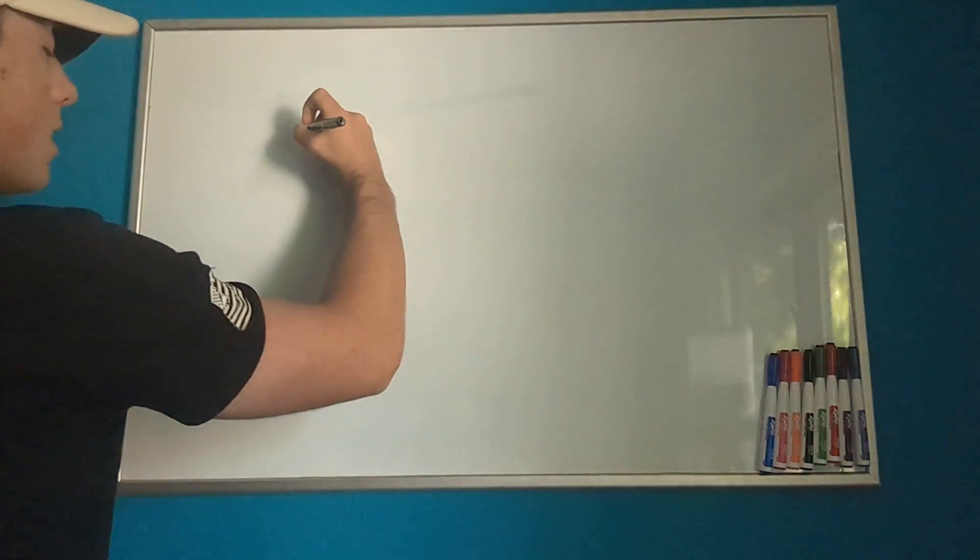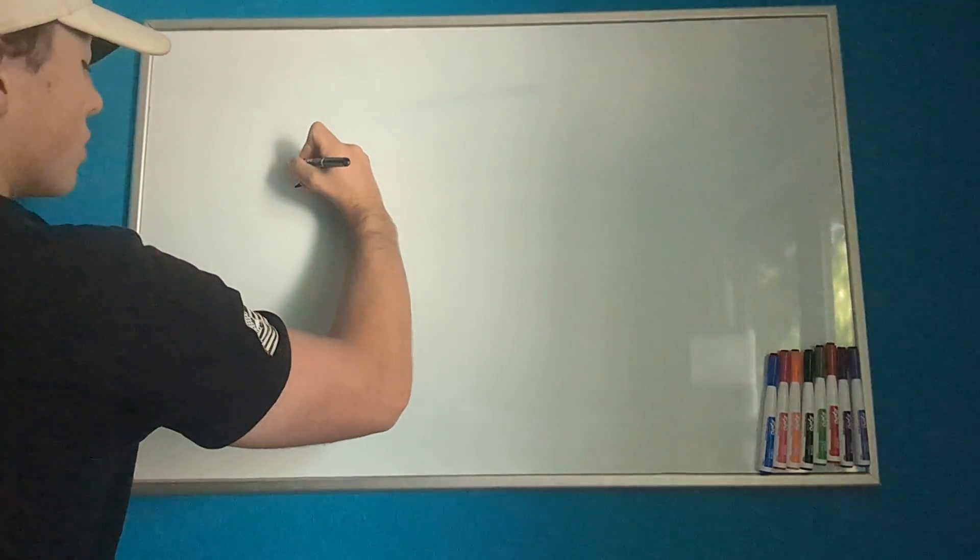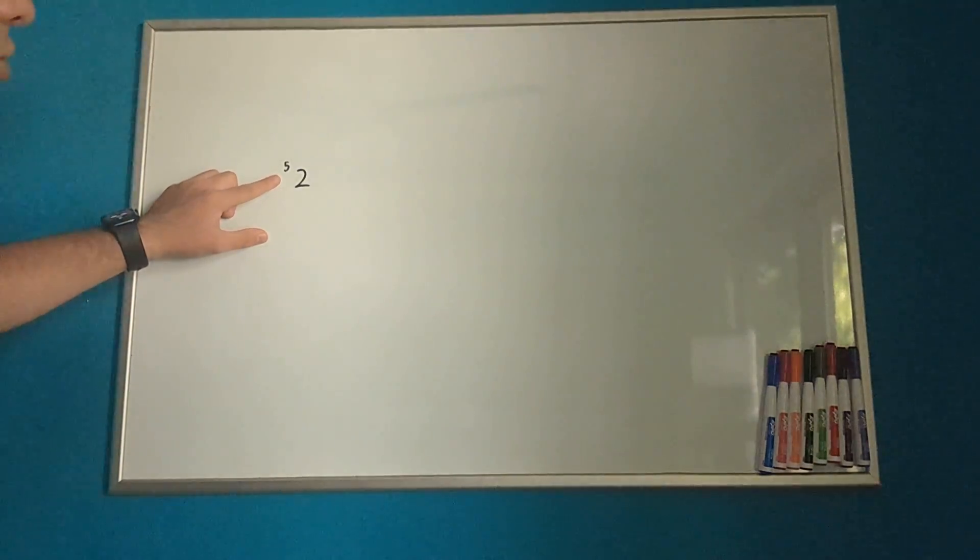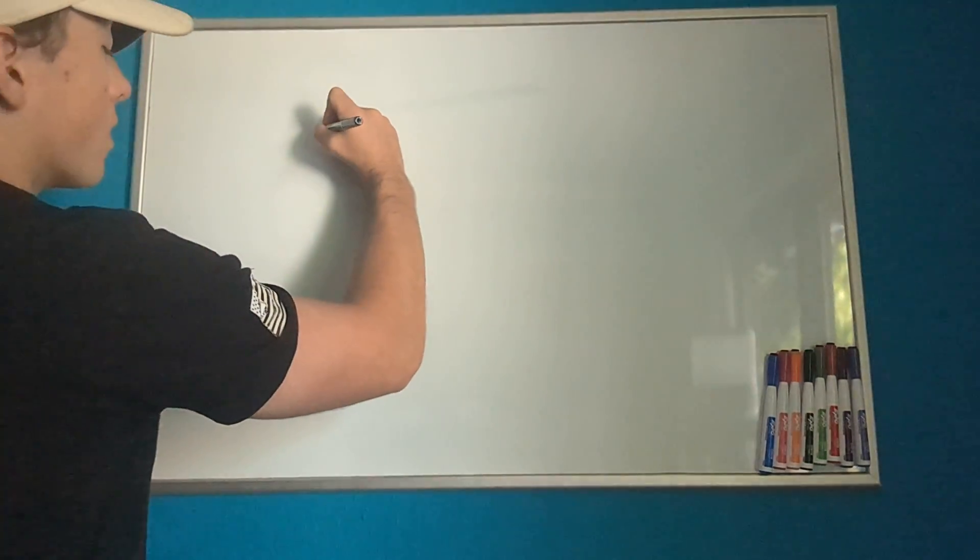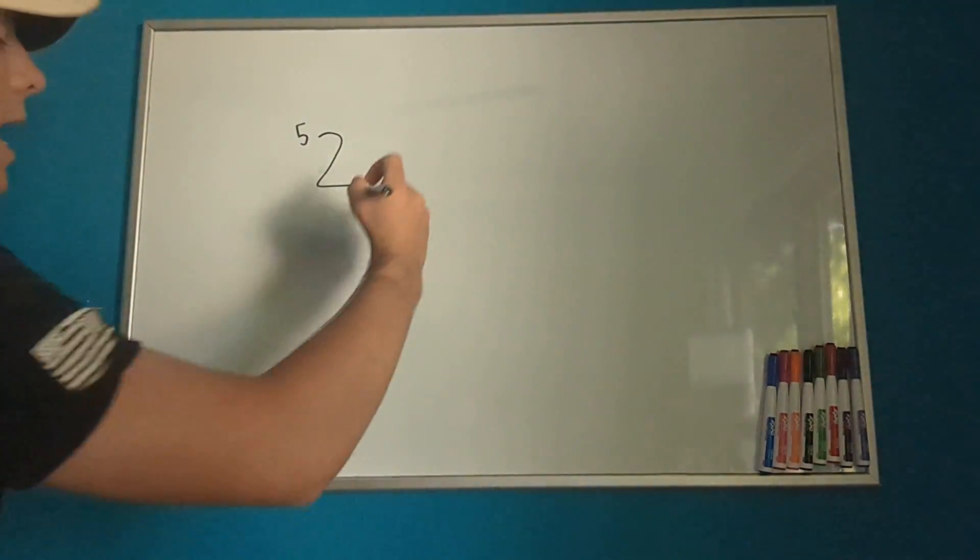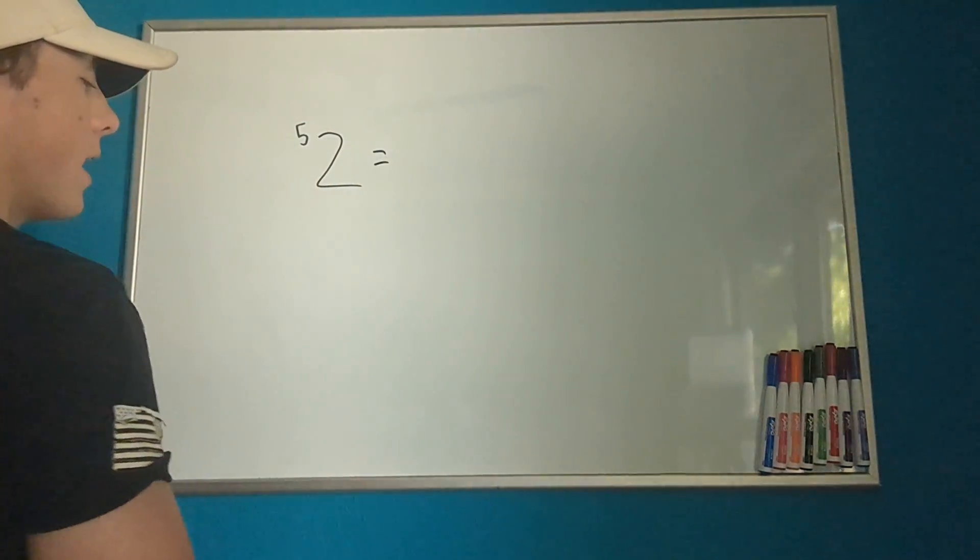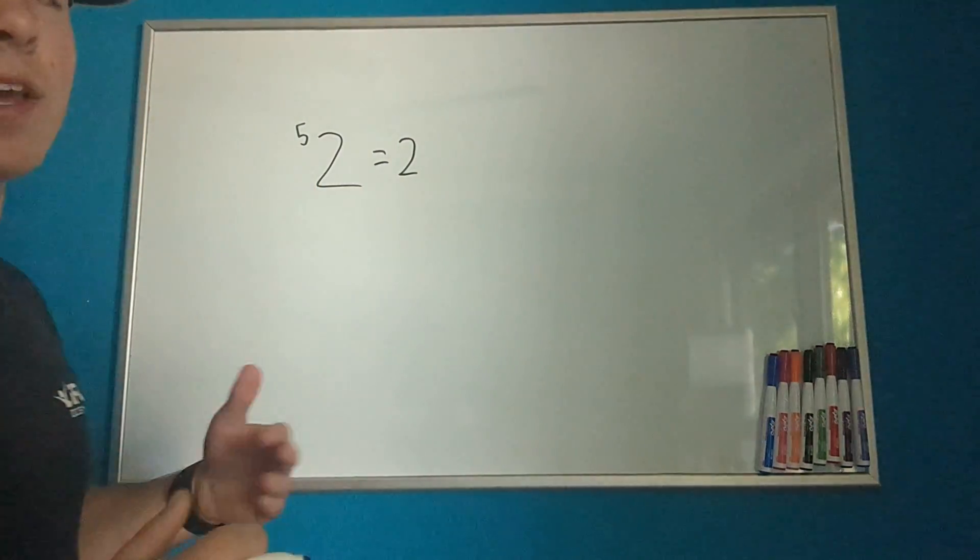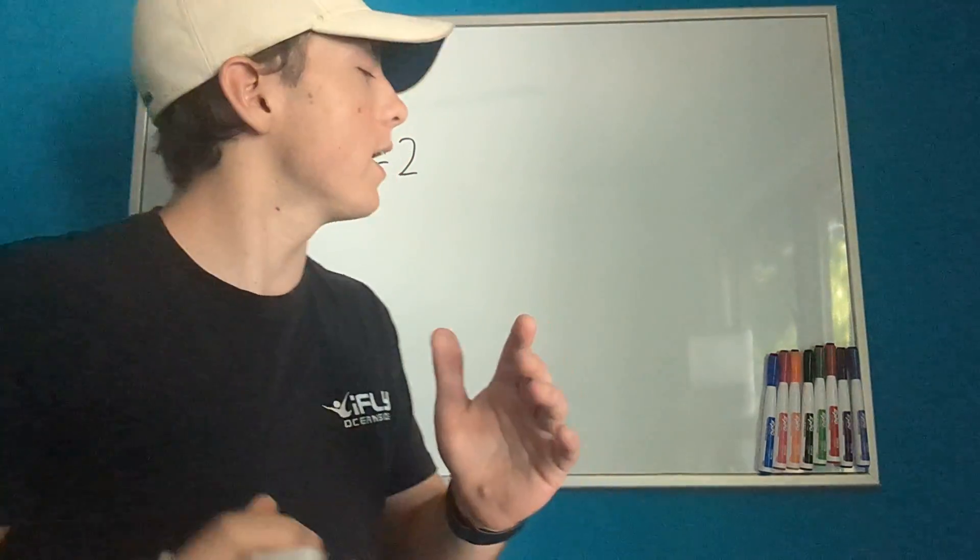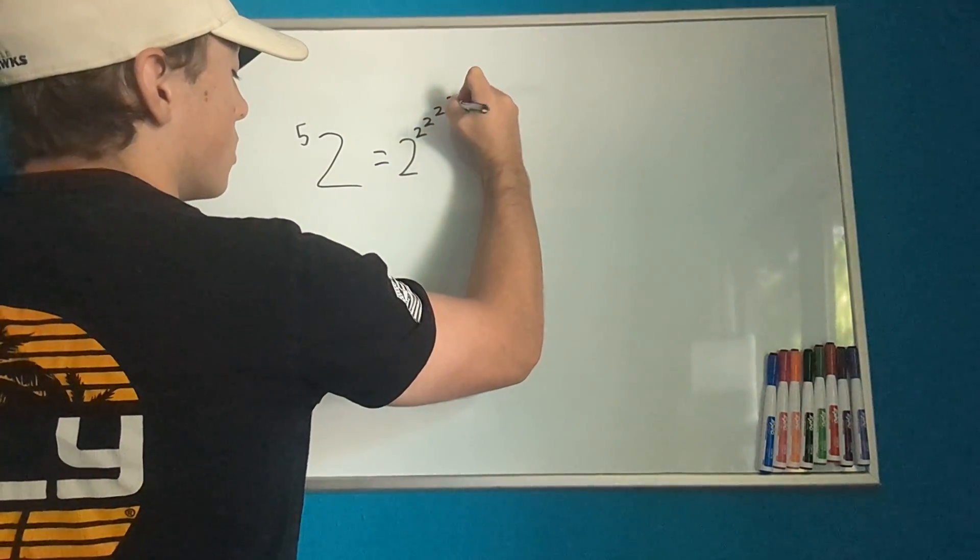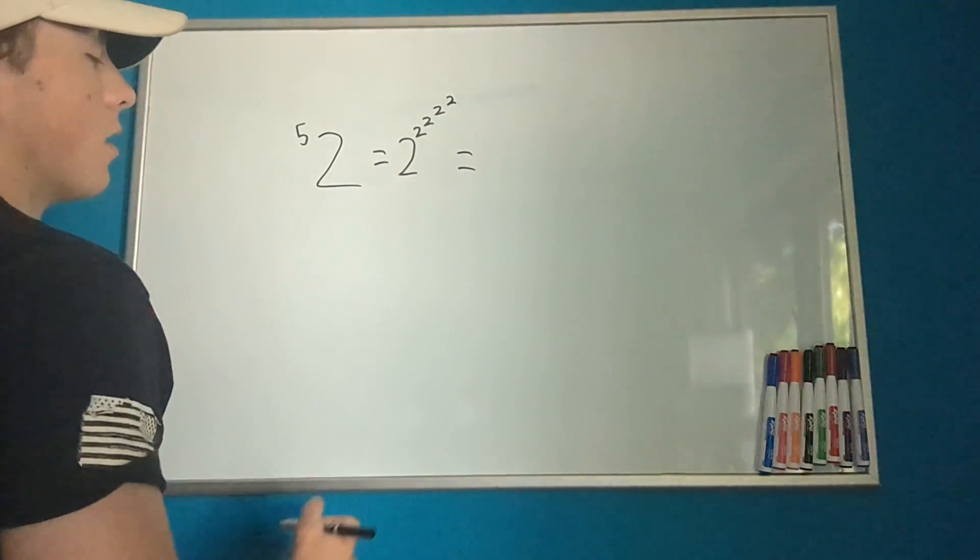So if we have, let's say we have a 2, and then in front of the 2 we have a 5. So this is where we're going to put the tetration. Let me write that a little bit bigger. We have a 2, and in front of the 2 we have a 5. That is going to be 2, we're going to have 5 twos in total. That includes the base right here. So we're going to have 2 to the 2 to the 2 to the 2. So this is going to be a very large number.